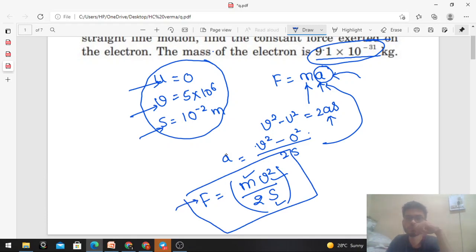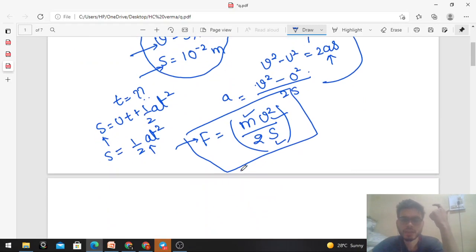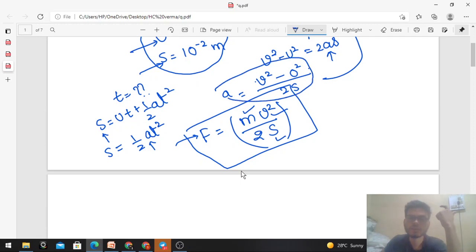If the problem asked how much time the electron takes to travel one centimeter, how would we find it? For time, we have the equation s = ut + ½at². Since s is known and initial velocity is zero, the equation becomes s = ½at². We already found acceleration a = v²/2s. Substituting this value and solving for t², we get time.